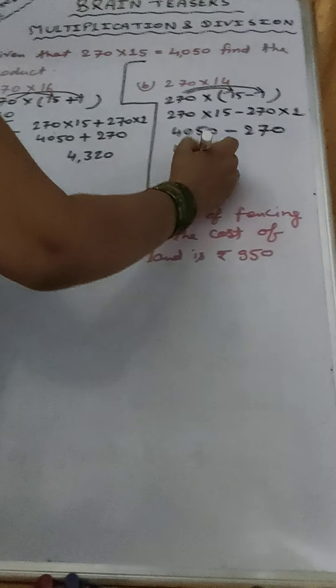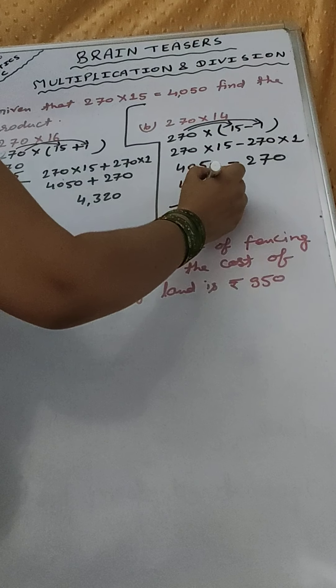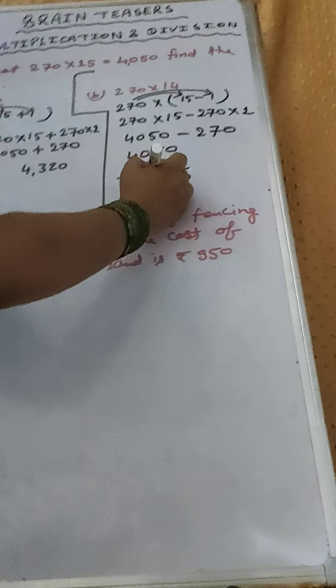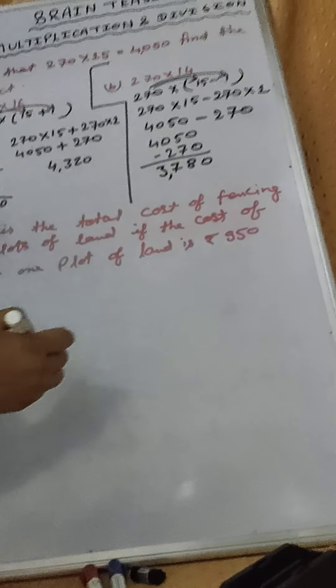Minus 270. We will subtract here. 0, 50 minus 7, that will be 8. 9 minus 2, that will be 7. And here 3. That is 3780.